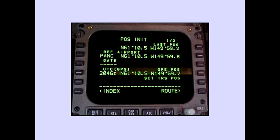Present position is then entered using the FMS-CDU. First, enter the four-letter ICAO Departure Airport into the reference airport position. Then compare the GPS position with the displayed reference airport position. If they are within reason, select the GPS position into the scratch pad and select this position into the set IRS position line.